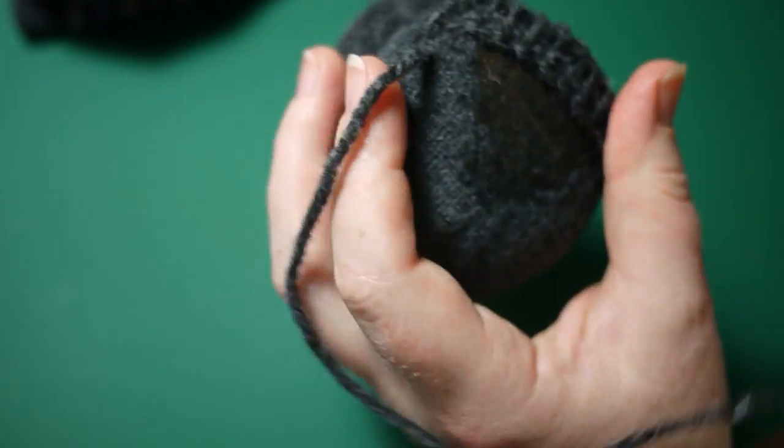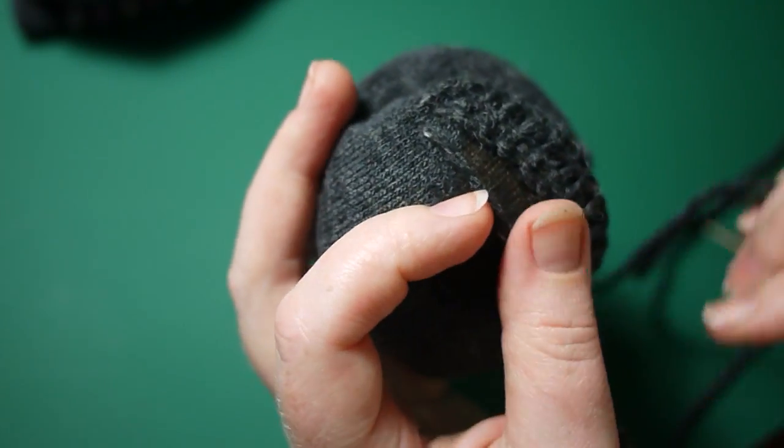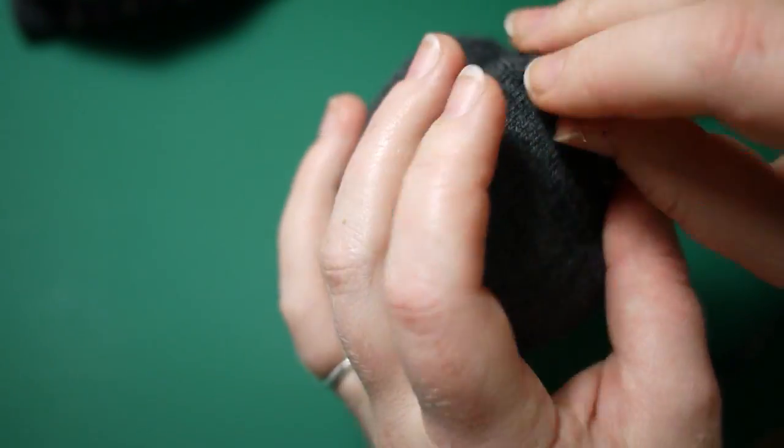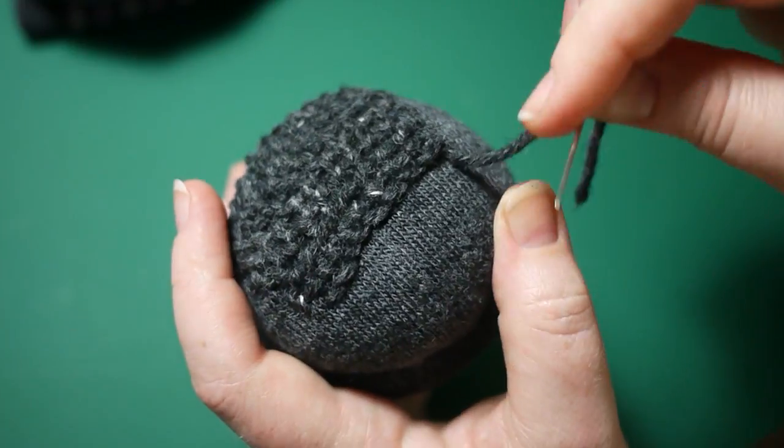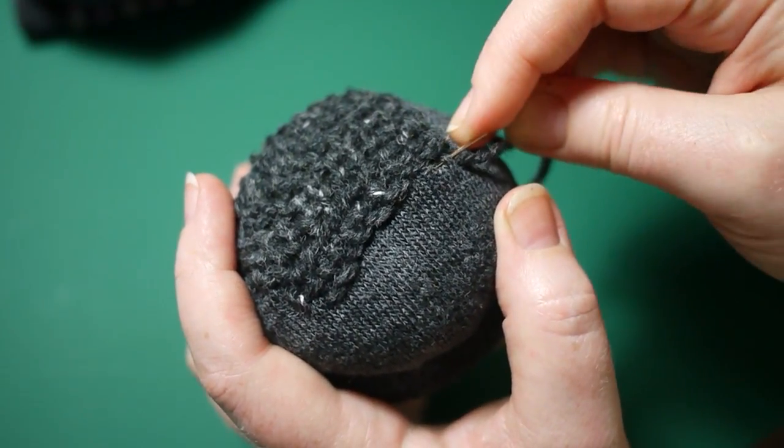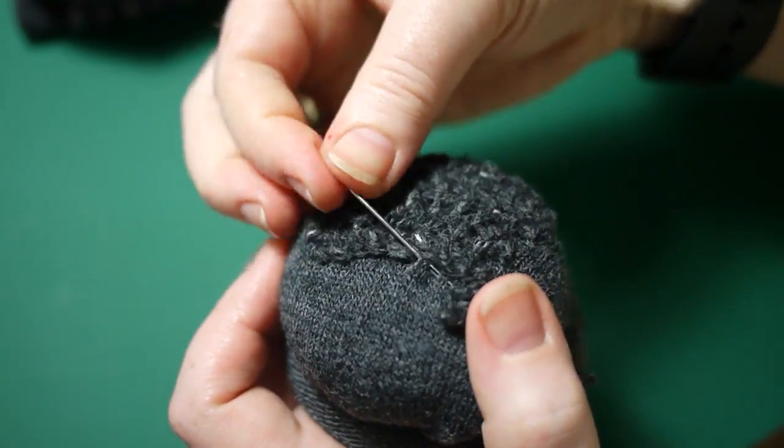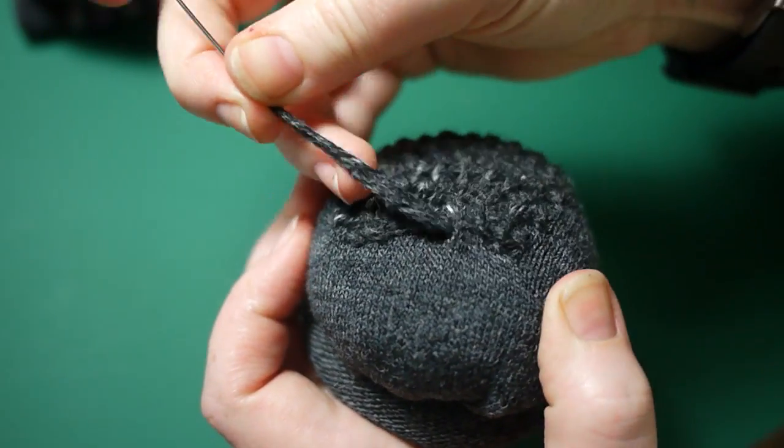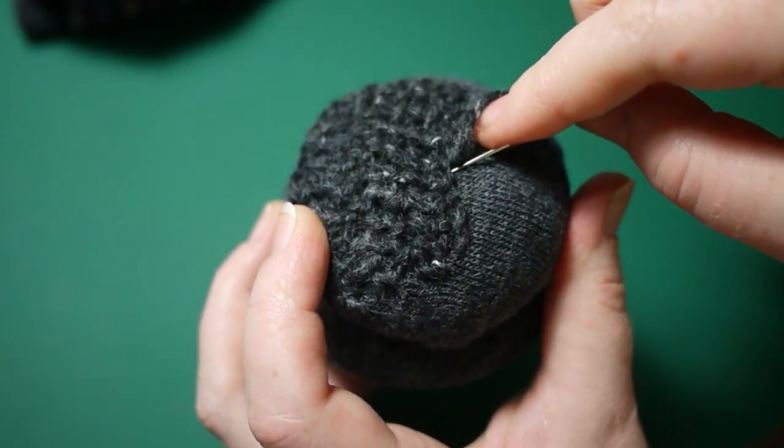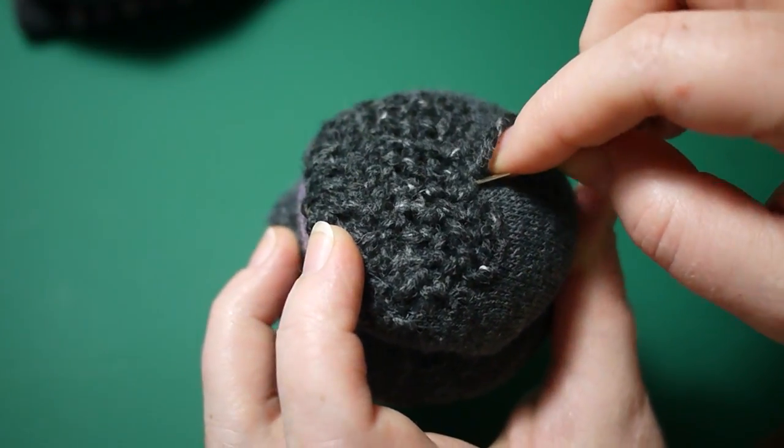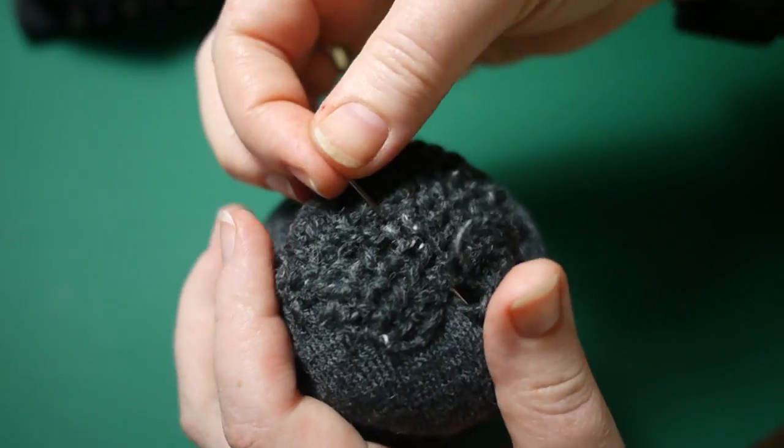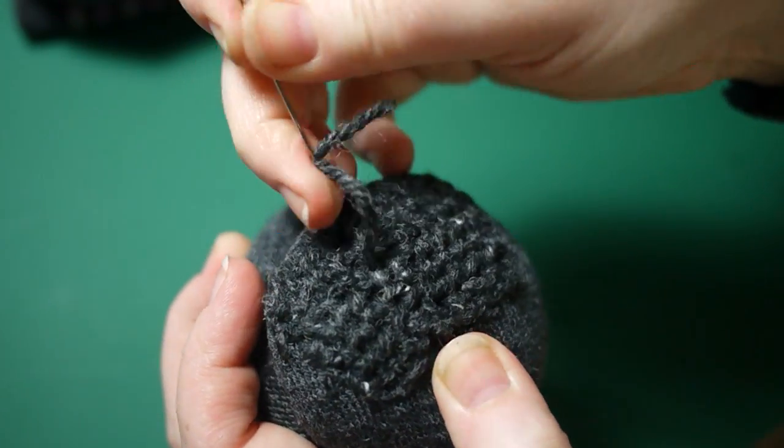And you just continue in the same way, going left to right and right to left. And then at the very end, I do a running stitch, again just to anchor the tail, make sure it can't unravel. And I'll just bury it through the middle. Make sure it's all nice and flat.